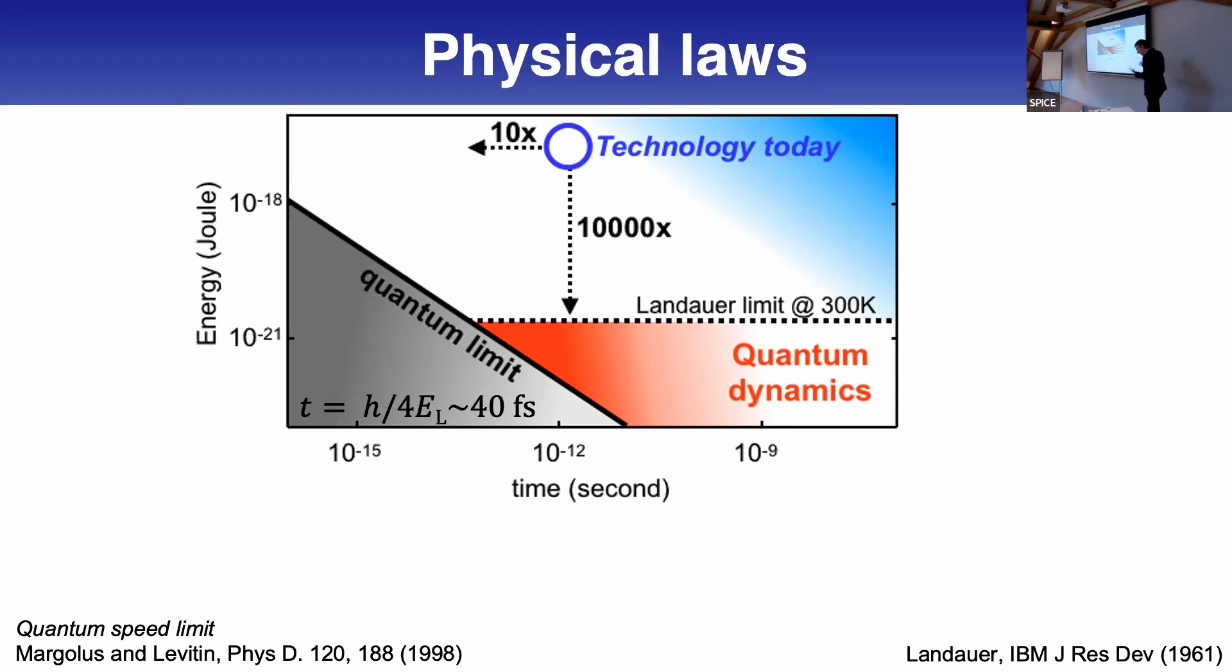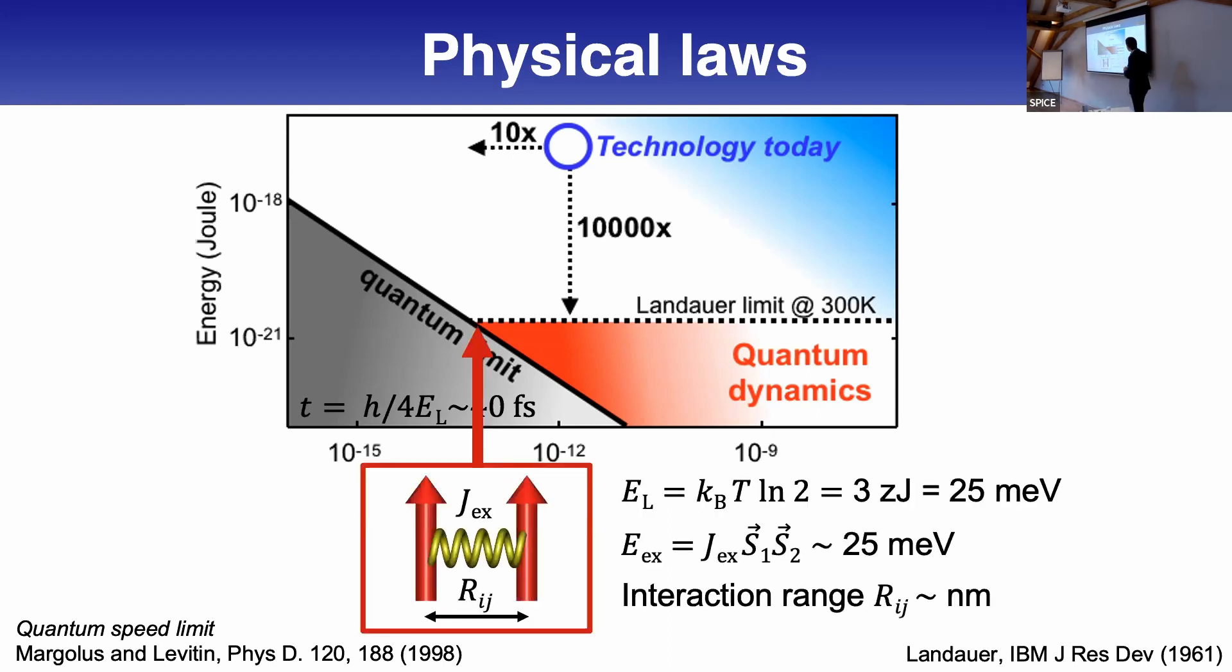That means you reach this timescale of about 40 femtoseconds. This is very fascinating because people nowadays dream about petahertz magnetism. You can do it, it's fundamentally interesting, but it means the energy is higher. The optimal regime is where magnets at room temperature have their energy scale.